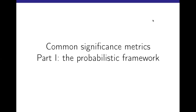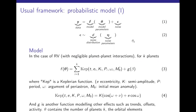To understand the common significance metrics in the RV literature, we will start with the probabilistic framework. Your data is modeled as a sum of a deterministic function plus a noise, where noise is a stochastic variable following a certain distribution. You don't necessarily want to fix this distribution in advance — you might say that the noise belongs to a family of distributions, which you parameterize with parameters theta.